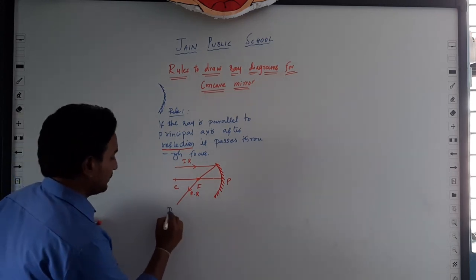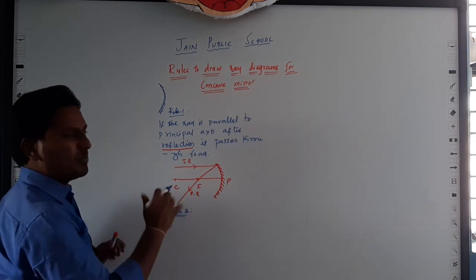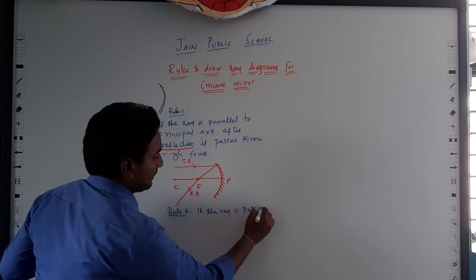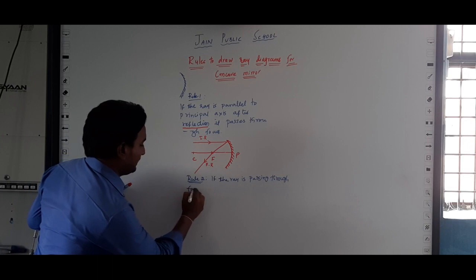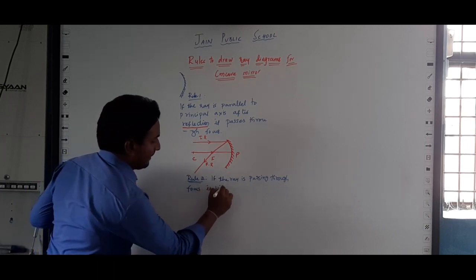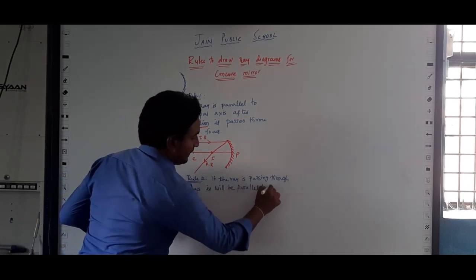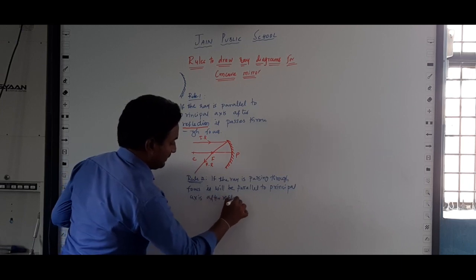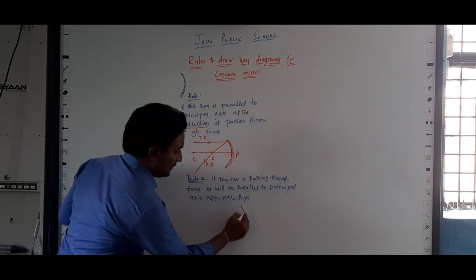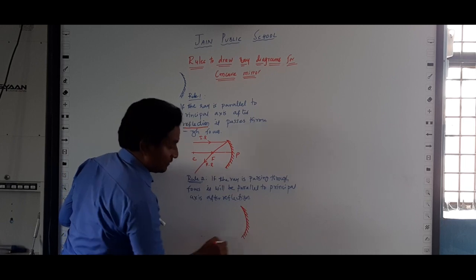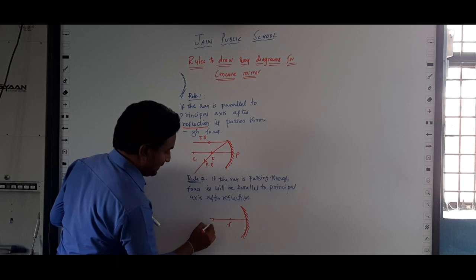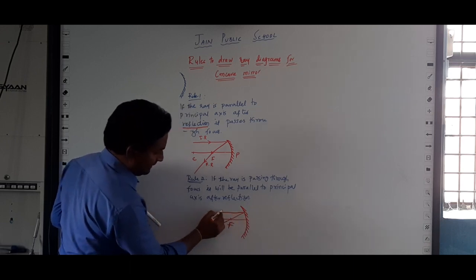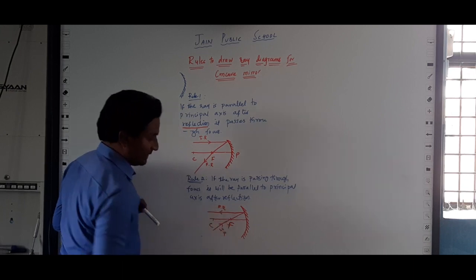Then we will go to rule number 2, which is the opposite of rule 1. If the ray is passing through the focus, after reflection it will be parallel to the principal axis. So I will draw a concave mirror and draw the principal axis. This is the focus, this is the center of curvature. If the ray is passing through the focus, this is the incident ray, and this is the reflected ray — it becomes parallel to the principal axis.